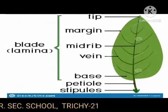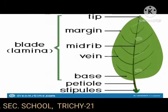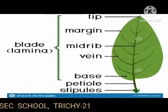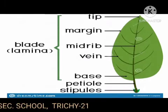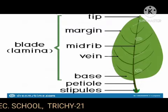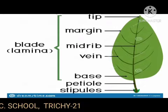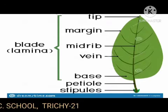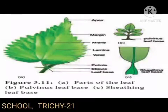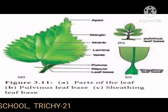Parts of the leaf: the three main parts of a typical leaf are leaf base, petiole, and lamina. The leaf base is otherwise called hypopodium. The part of the leaf attached to the node of the stem is called the leaf base. It usually protects the growing bud at its axil.